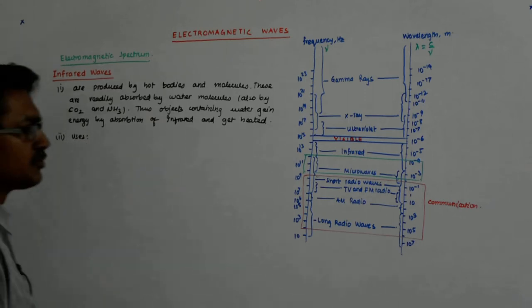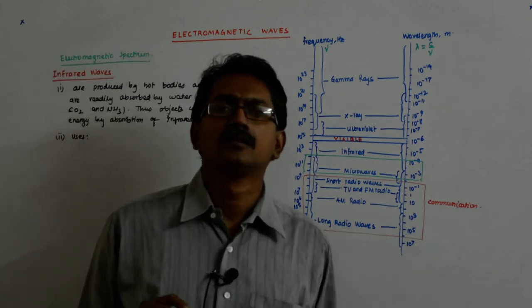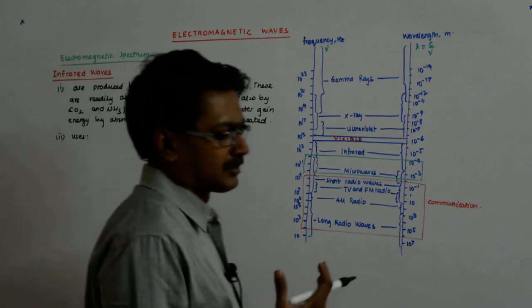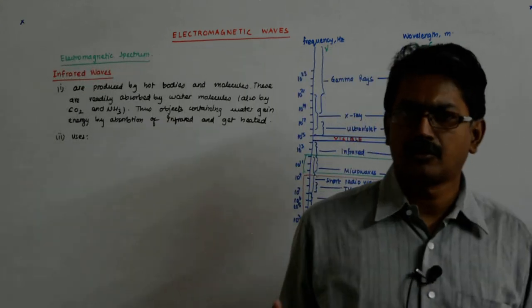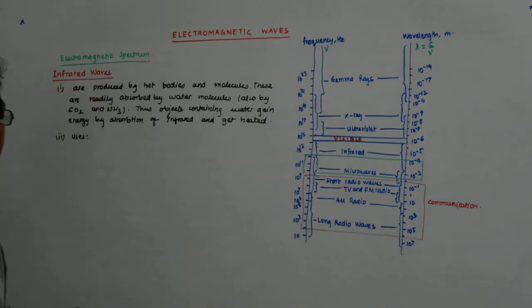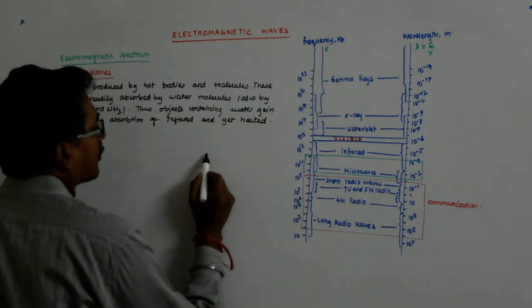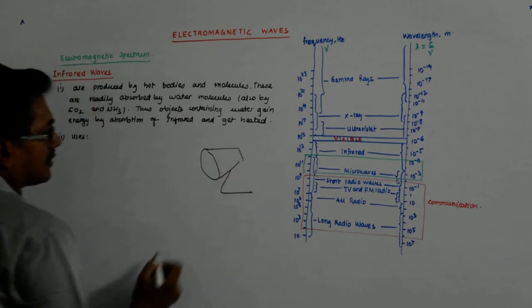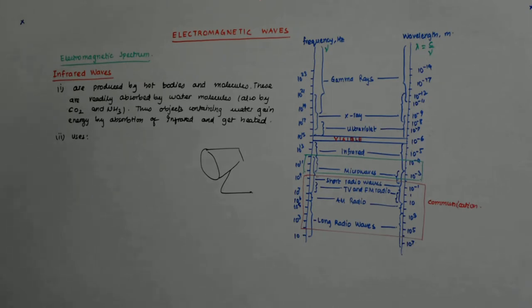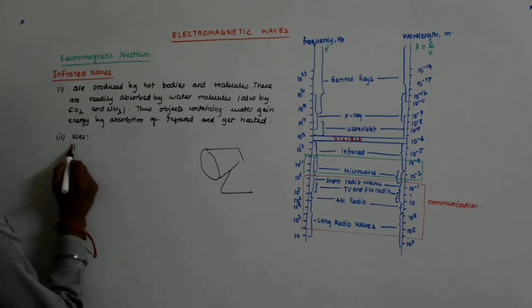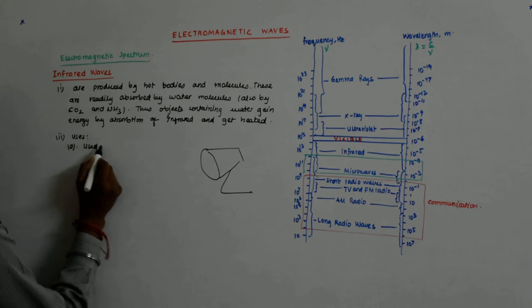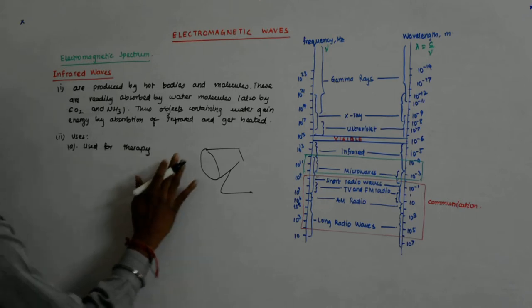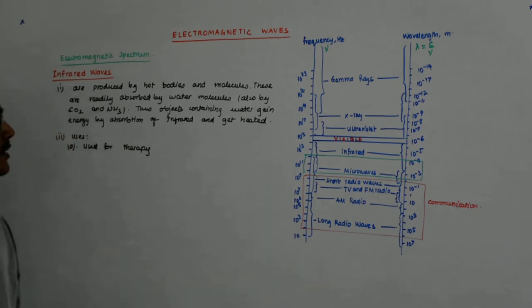You must have seen infrared therapy. If someone has stiff joints or swollen muscles, an orange kind of lamp is used for therapy.